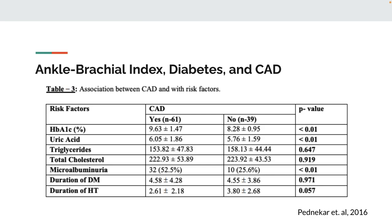If you look here, HbA1c is a good way to look at the average blood sugar of a diabetic over the last three months or so. A value of 9.6 — going up or down 1.5 points — is a pretty high A1c. A really well-maintained diabetic will have an A1c of 7, and a normal non-diabetic can have it in the 6s. So this number is really pretty high. You can see that the p-value and its association between HbA1c and coronary artery disease is pretty significant.